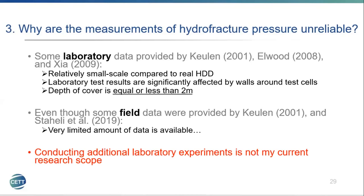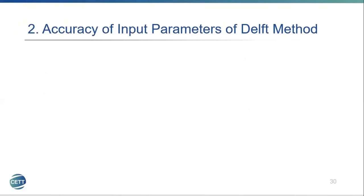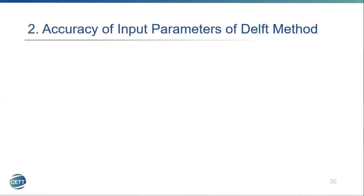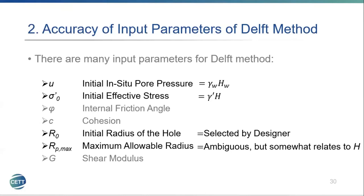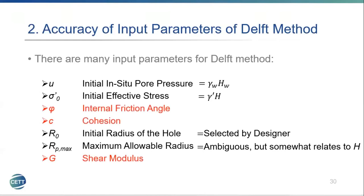Conducting additional laboratory experiments was not within my current research scope, so I decided to improve the other approach: the accuracy of input parameters for the DELF method. The DELF method has many input parameters, starting with the initial in-situ pore pressure assumed to be hydrostatic, initial effective stress assumed equal to effective overburden stress, R0 as the initial bore radius selected by the designer, and RPmax which is ambiguous but somewhat relates to H. The friction angle, cohesion, and shear modulus are the geotechnical parameters to be determined.